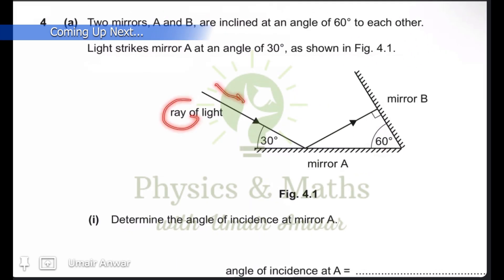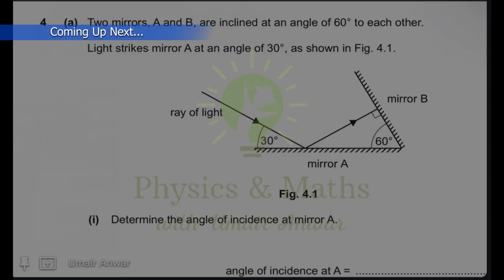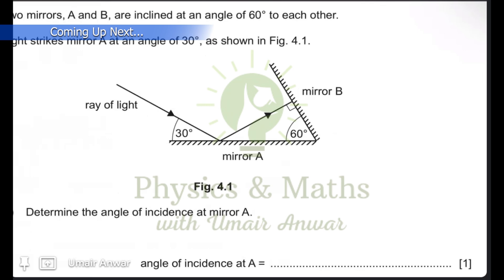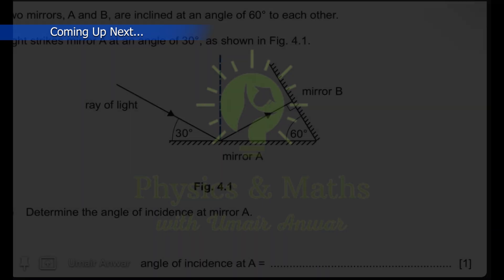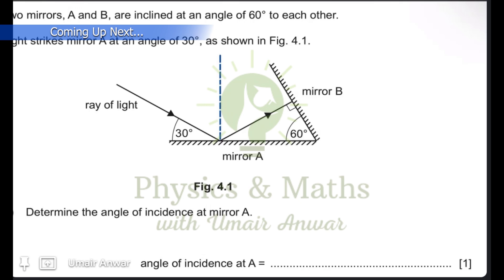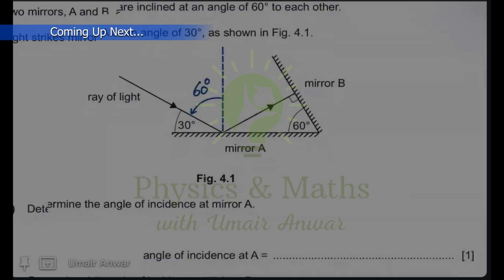A ray of light is coming and strikes the mirror, and the angle measured is 30 degrees with the surface of the mirror. The angle of incidence is measured using a normal, which is a line perpendicular to the surface at the point of striking. We measure the angle from the normal to the incident ray. Since the total angle is 90 degrees, the angle of incidence is 90 minus 30, equal to 60 degrees.